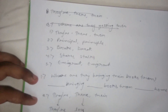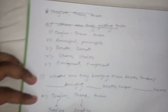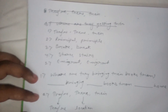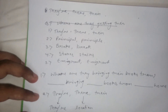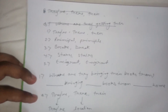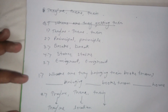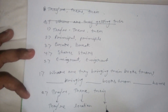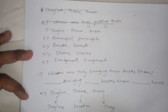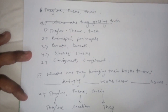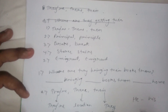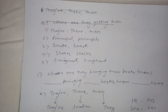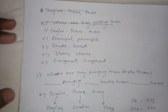'There' (t-h-e-r-e) refers to a location or an indication to something — a place. 'Their' (t-h-e-i-r) is a possessive pronoun used to show possession for the pronoun 'they', just like 'his' is used for 'he' and 'her' is used for 'she'.